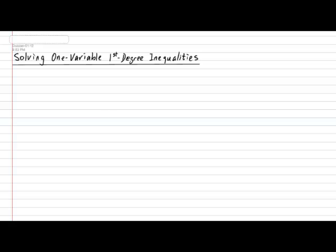Solving one variable first-degree inequalities is extremely easy because it's largely very similar to solving regular equations. So, as an example, suppose I ask you to solve the following inequality: What is the value of x in 3x plus 9 greater than or equal to 0? For the most part, solving x involves the same procedures as you would employ in a regular equation. So we start with the expression 3x plus 9 greater than or equal to 0.